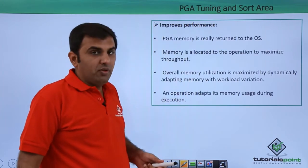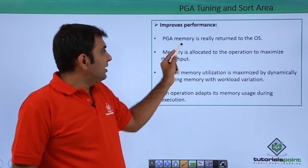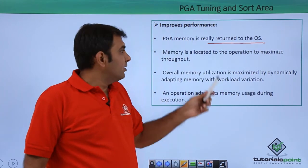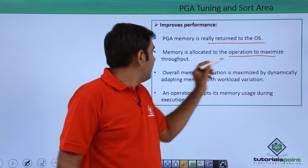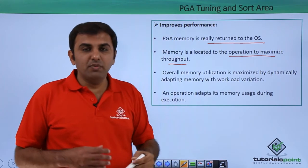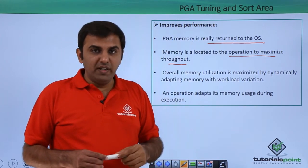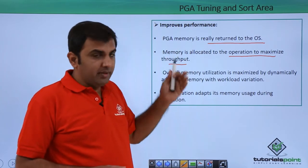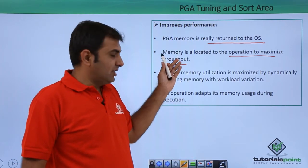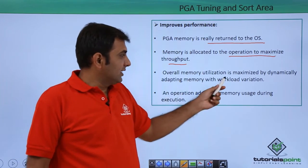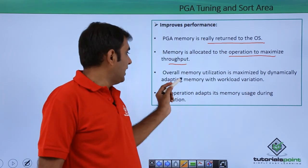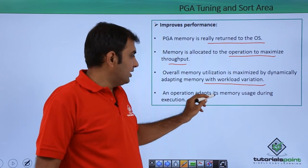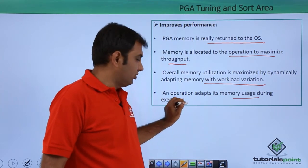To improve performance, PGA memory is returned to the OS, and memory is allocated to operations to maximize throughput. Whenever you are performing order by, group by, or hash join operations, PGA is used — the main purpose is to maximize throughput. Overall memory utilization is maximized by dynamically adapting memory within workload variation, and the operation adapts its memory usage during execution.